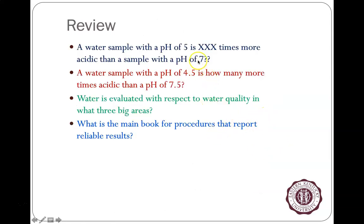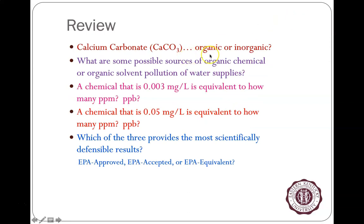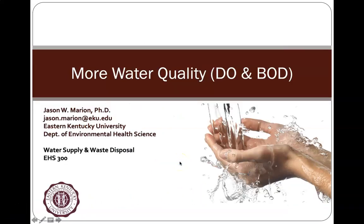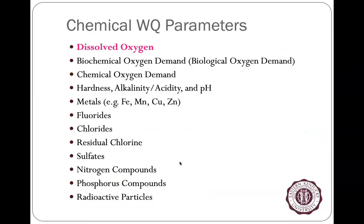Quick review: pH 7 versus pH 5 is 100 times more acidic. We evaluate water with respect to physical, chemical, and biological parameters. We get our results using standard methods. Some review items will appear on a quiz. The next video will cover more water quality topics including dissolved oxygen and biochemical oxygen demand. Questions can be emailed to jason.marion@eku.edu.